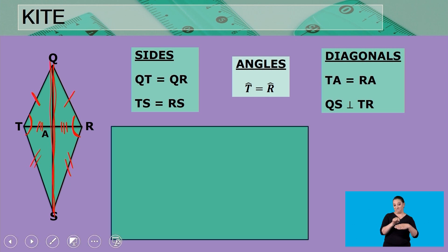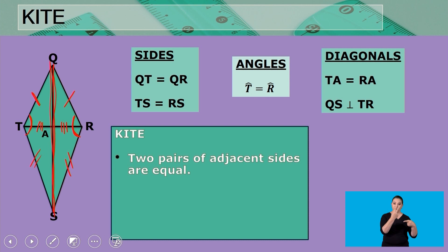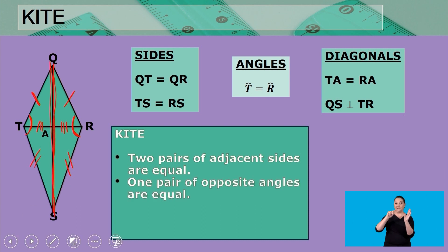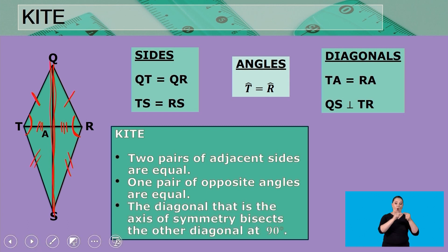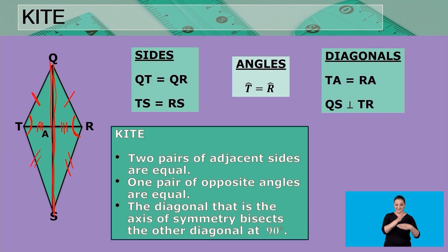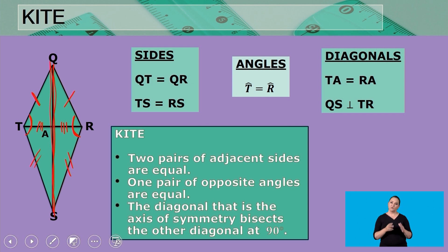To wrap up the properties of a kite: there are two pairs of adjacent sides that are equal; one pair of opposite angles are equal; and the diagonal that is the axis of symmetry bisects the other diagonal at 90 degrees. Those are the properties of a kite.